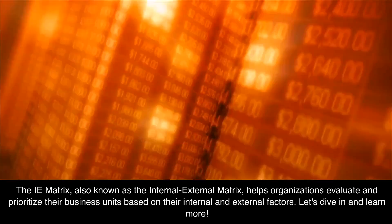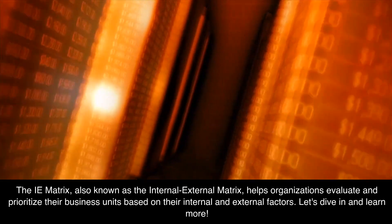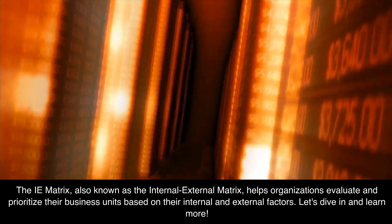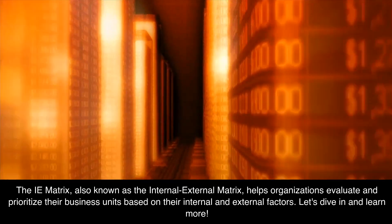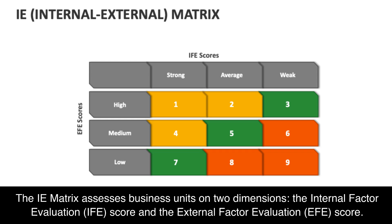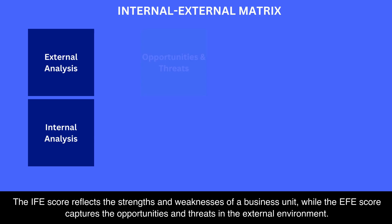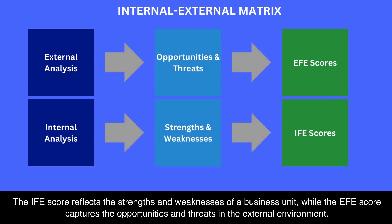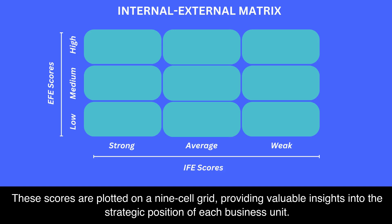The IE matrix, also known as the internal-external matrix, helps organizations evaluate and prioritize their business units based on their internal and external factors. The IE matrix assesses business units on two dimensions: the internal factor evaluation (IFE) score and the external factor evaluation (EFE) score. The IFE score reflects the strengths and weaknesses of a business unit, while the EFE score captures the opportunities and threats in the external environment. These scores are plotted on a nine-cell grid, providing valuable insights into the strategic position of each business unit.